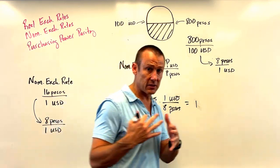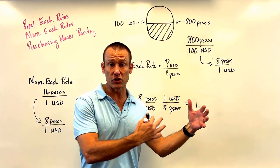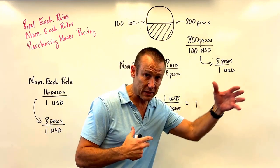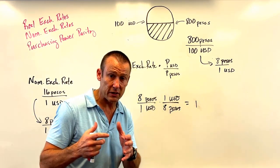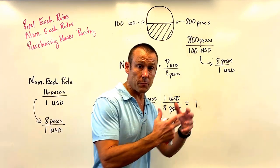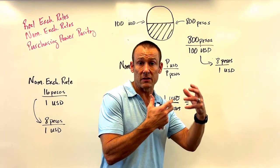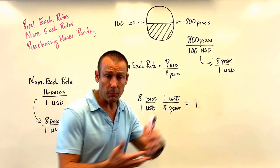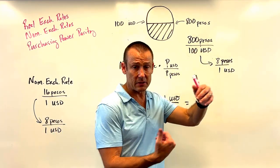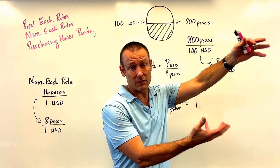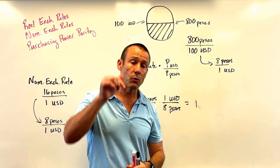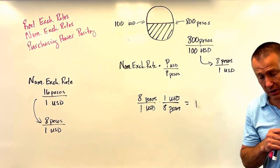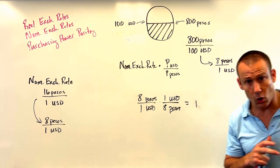For the American, their purchasing power used to double going into Mexico — that's what the old real exchange rate of 2 was showing. Now when they take dollars to the exchange market at the new nominal rate, their purchasing power stays the same — it's not doubling. So they'll buy less Mexican goods and services. US imports go down.